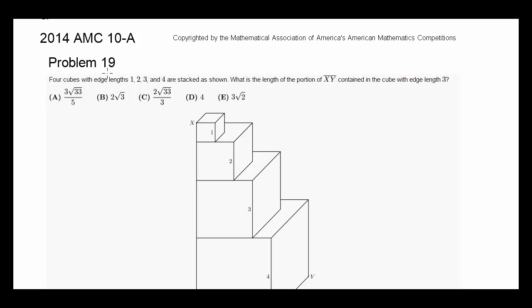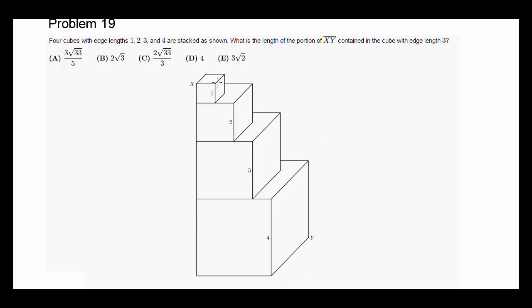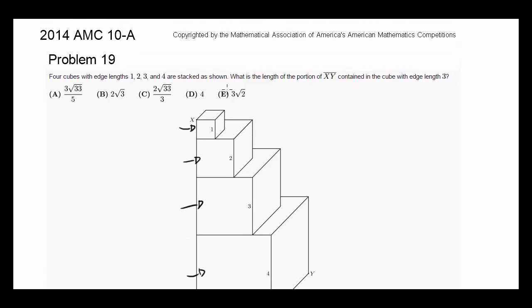Four cubes with edge lengths 1, 2, 3, and 4 are stacked as shown. We have the small cube with edge length 1, the bigger cube with 2, even bigger cube with 3, and the biggest one with edge length 4. And they are stacked as shown.